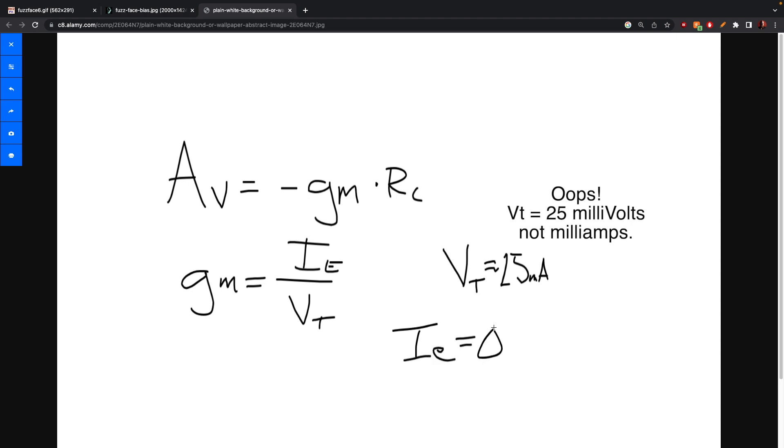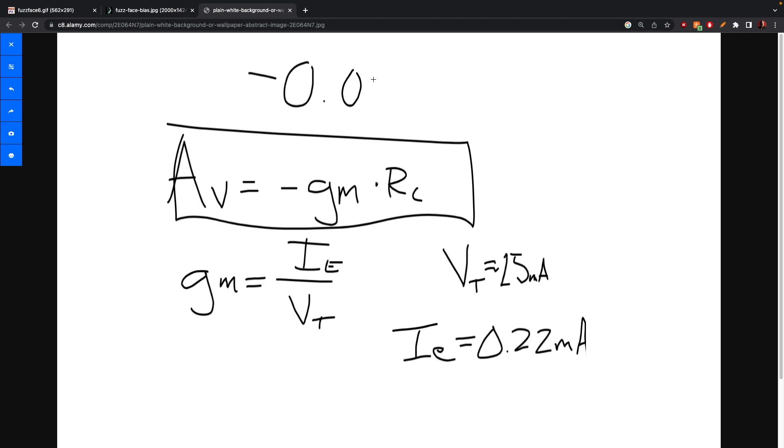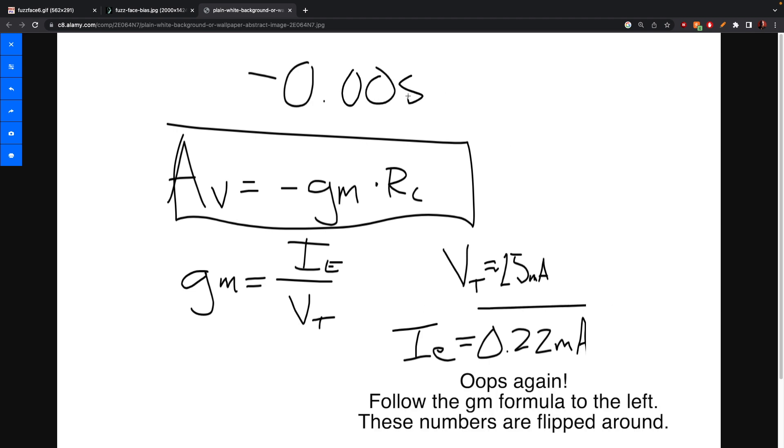And then just for simplicity, I'm not going to make you go through the whole thing. IE is equal to about 22 milliamps. So if we plug these numbers into our original formula here, I'm sorry. I'm skipping ahead a little bit here. If you divide these guys, you get 0.0088. That's our GM right there.